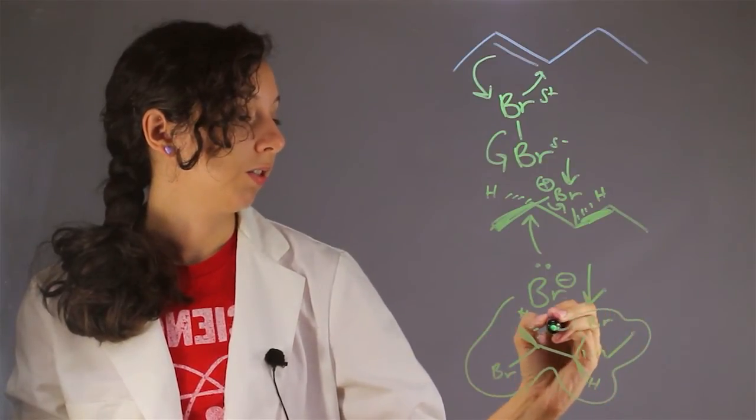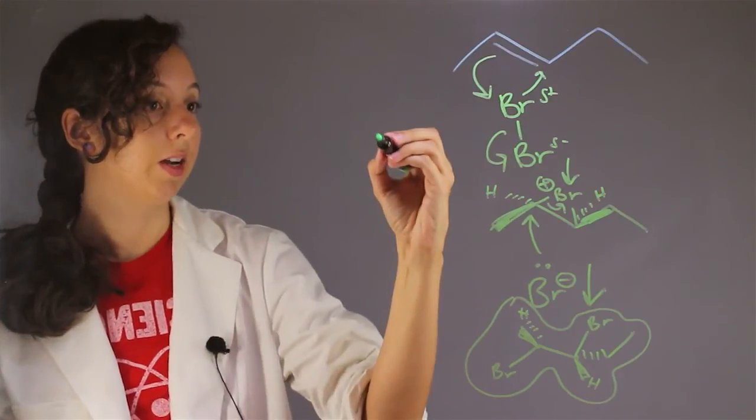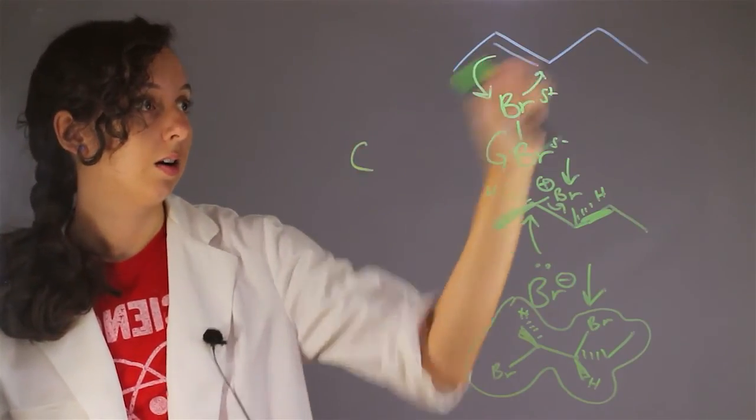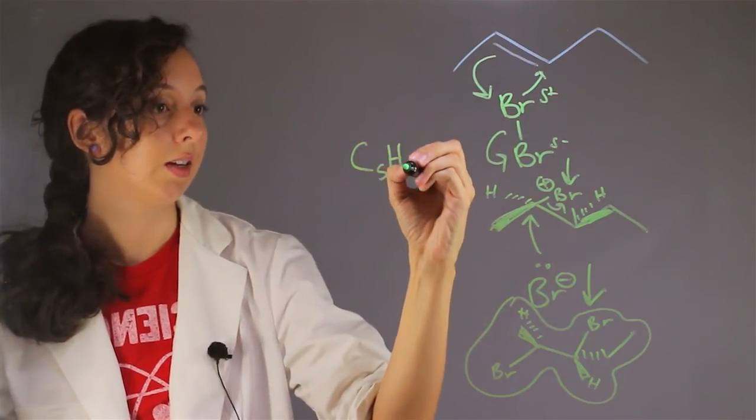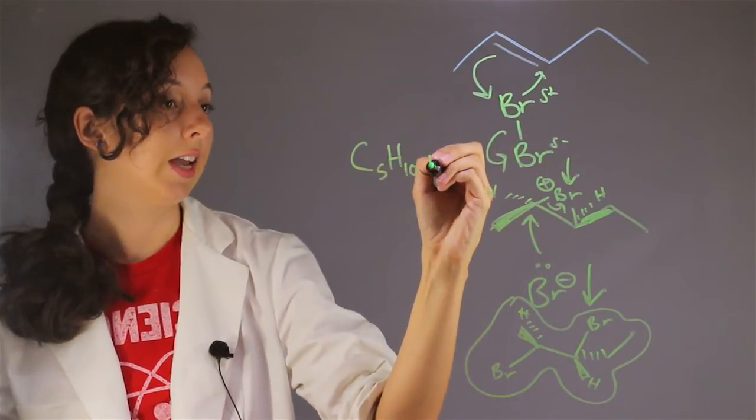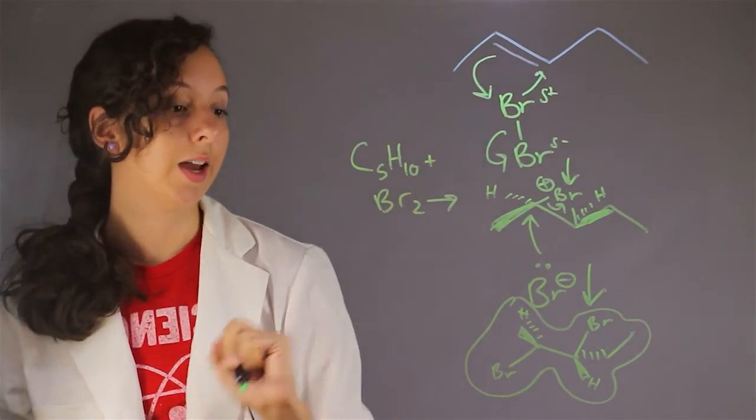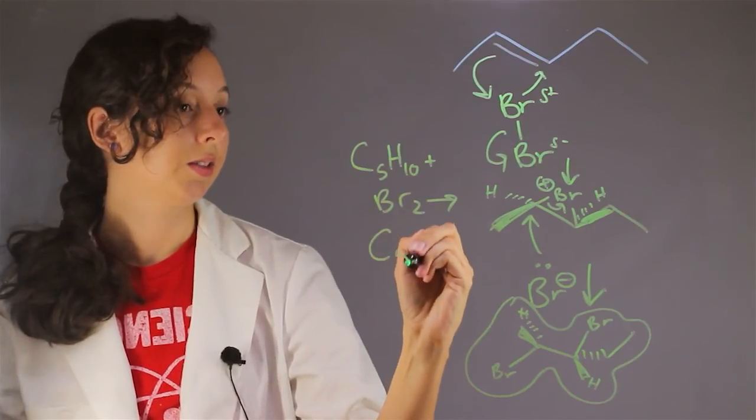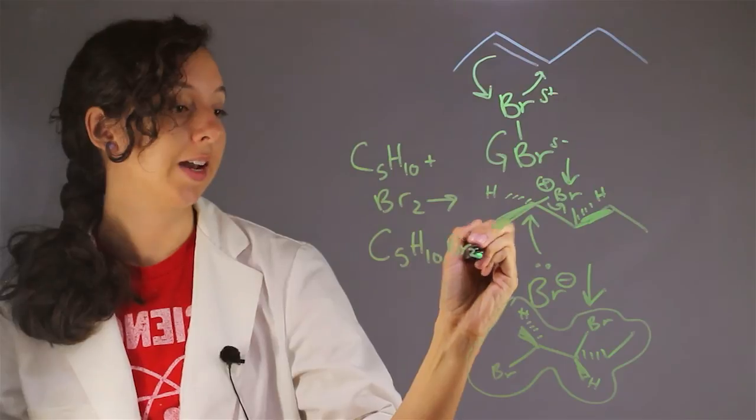And so just to give you guys the chemical formula for this, we started with our 2-pentene, which is C5H10. And we added Br2. And then we created a molecule that had the chemical formula C5H10Br2. So we just added bromine.